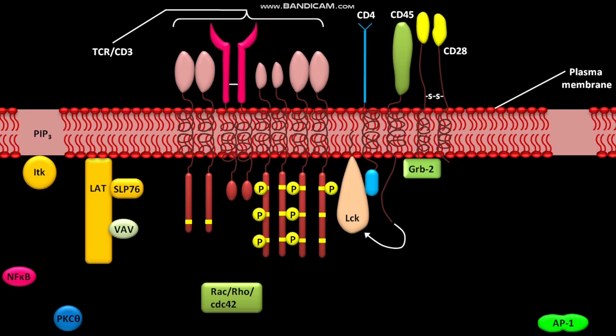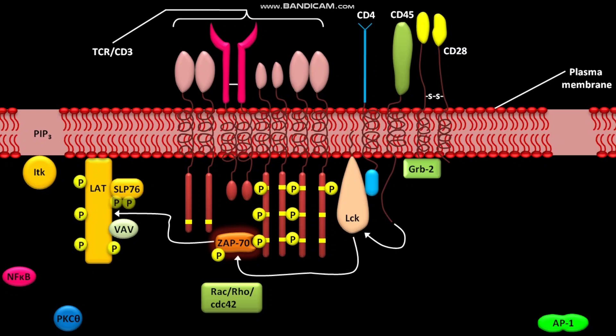ZAP70 then docks at the phosphorylated tyrosine residues of the CD3-zeta chains. ZAP70 is a tyrosine kinase. LCK mediates the phosphorylation of inactive ZAP70, causing it to become active. The active ZAP70 then phosphorylates LAT and SLP76.